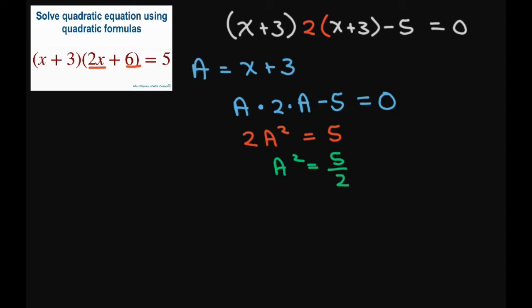And then when you square root both sides and do the plus and minus, you get A equals plus or minus square root of 5 divided by square root of 2.